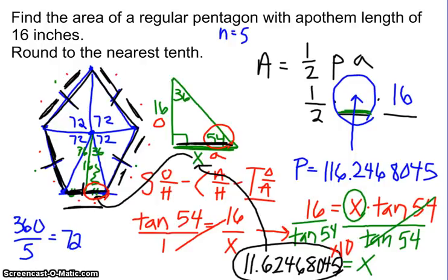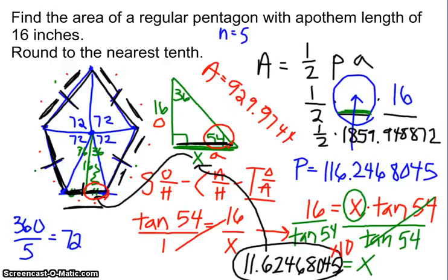That's what goes into my formula one half perimeter times apothem. It's still too early to round. So hopefully you've left the 116.2468045 in your calculator. So all you have to do now is hit times 16. That gave me another big number. So I have one half times 1859.948872. And the reality is that's not even necessary for you to write down. Just keep that in your calculator. And all you have left to do is multiply it by one half, which is the same thing as dividing by two. I got an answer. The area is 929.9744358.